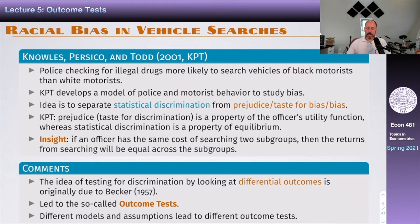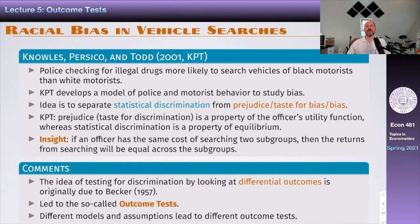KPT takes this idea of prejudice or taste for discrimination as a property of the officer's utility function, where statistical discrimination is a property of equilibrium. The difference is: it could be that in equilibrium, say, Blacks are carrying more drugs than Whites, because that's the optimal solution to the model given the utility functions. So perhaps as a police officer you want to take that into account in your search to be more successful. But if in the utility function the police officer simply doesn't like Blacks, we'll call that bias. The insight is that if an officer has the same cost of searching the two subgroups — Blacks and Whites — then the returns for searching them will be equal across subgroups.